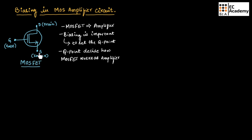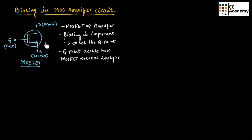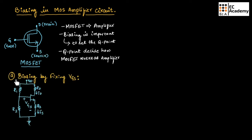If we consider the symbol of a MOSFET, it consists of three terminals: drain, gate, and source. The voltage between gate and source is generally known as VGS, and the voltage between drain and source is known as VDS.